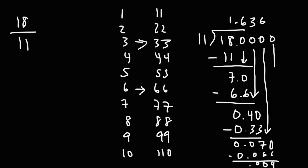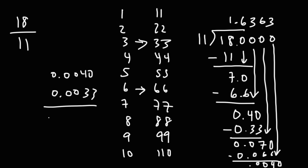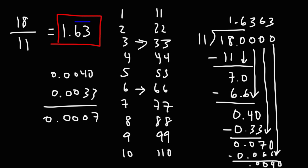Now let's add another 0 — this becomes 70, which is what we had before. 11 goes into 70 six times. 11 times 6 is 66. 70 minus 66 gives us 4, and adding a 0 gives us 40. 11 goes into 40 three times — notice that this is going to repeat again. If you were to continue this pattern, it's going to be 6, 3, 6, 3, 6, 3 repeating. So we can write our answer as 1.63 with a bar over the 6 and the 3, since both are repeating. 18 over 11 is 1.63 repeated.